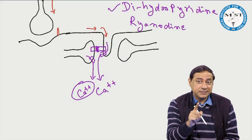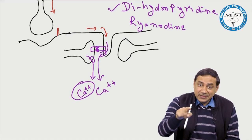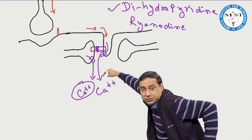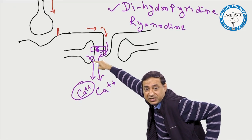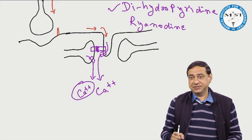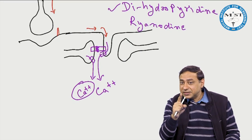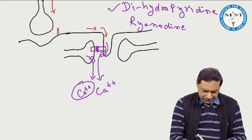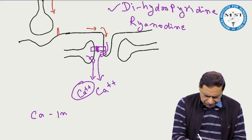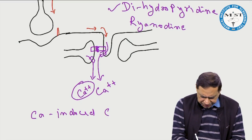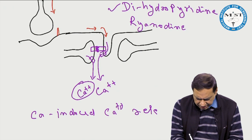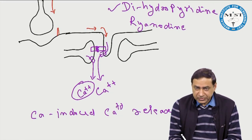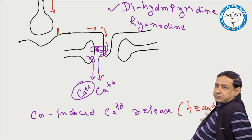In the heart, the theory is slightly different. In the case of the heart, the ryanodine receptor is activated by calcium — the small amount of calcium coming from the T-tubule source activates further calcium release. This phenomenon is known as calcium-induced calcium release, and it is seen in the heart, not in skeletal muscle.